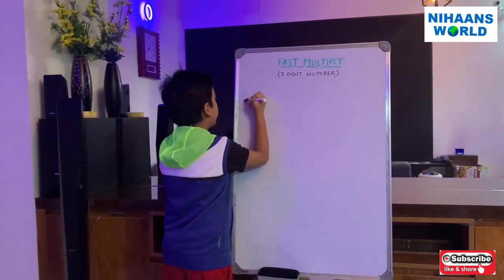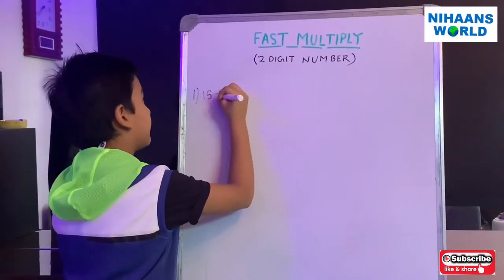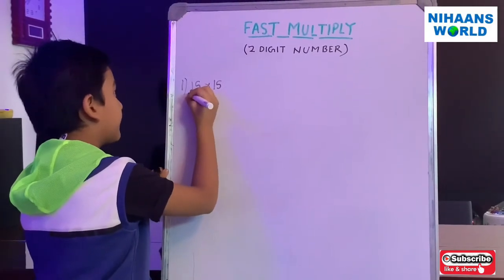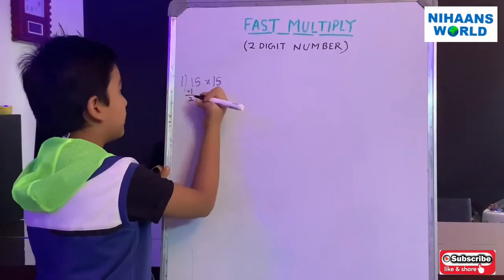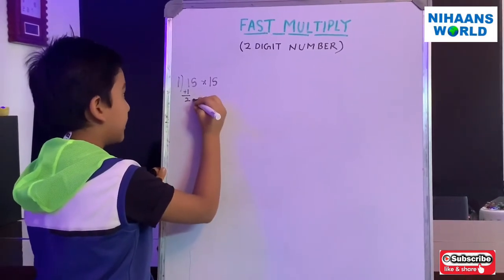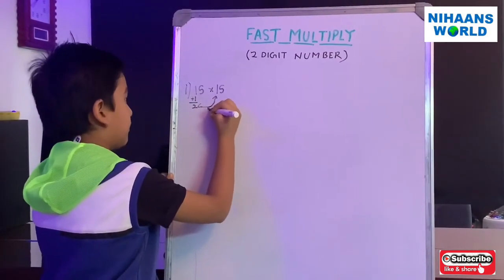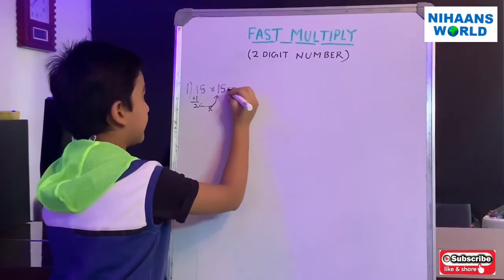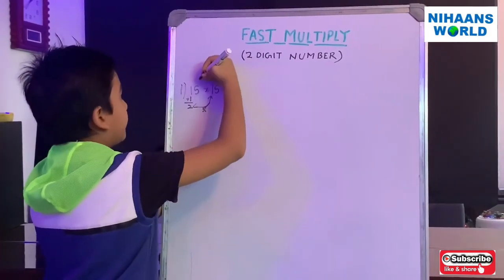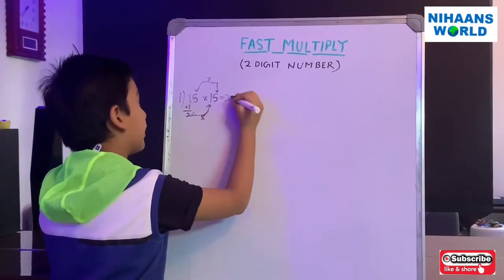So the first example is 15 multiplied by 15. So 1 plus 1 that is 2 we know and we have to multiply 2 multiplied by 1. So that is 2 and 5 multiplied by 5 that is 25.